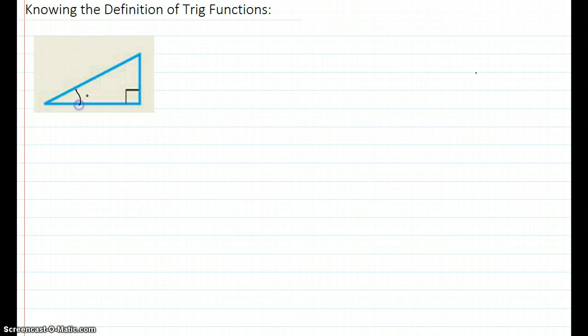So let's label one of these angles that is not 90 degrees with theta, and then let's call this the opposite. Let's call this side the adjacent because this is the opposite of the angle and this is the adjacent of that angle. And finally, let's call this the hypotenuse.